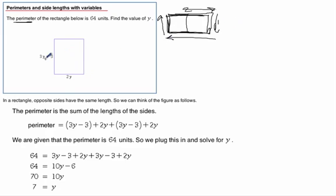Here in a rectangle, we know the opposite sides have the same length. So if this left side is 3y minus 3, then this side is also 3y minus 3. And the top is 2y. Using the information we know about perimeters, the perimeter is the sum of the lengths of all the sides.